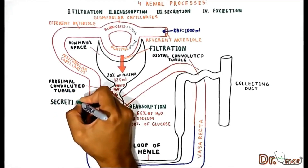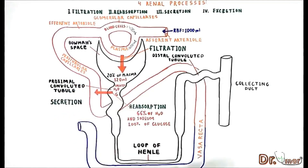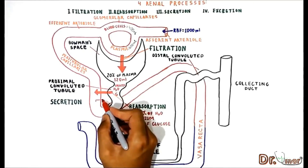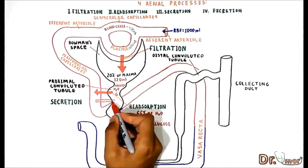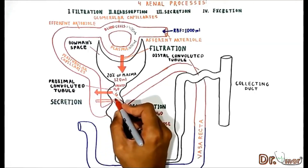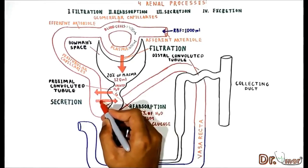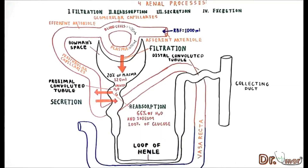The third step in making urine is tubular secretion. Tubular secretion is the transfer of materials from peritubular capillaries to the renal tubular lumen. Usually only a few substances are secreted, and many drugs are eliminated by tubular secretion.